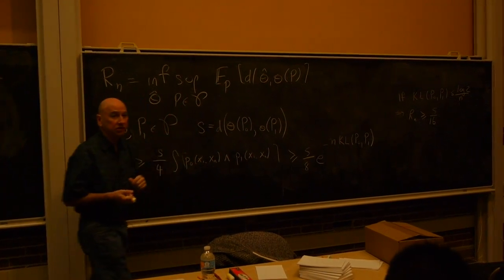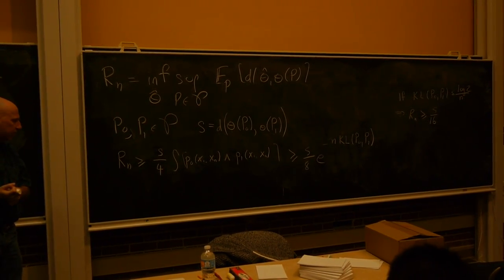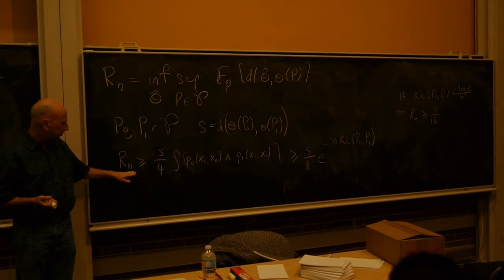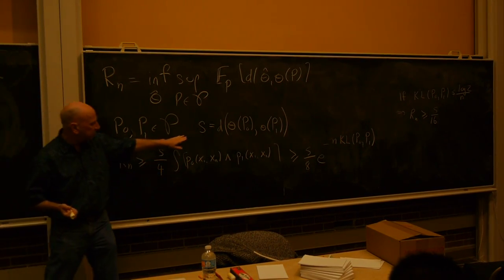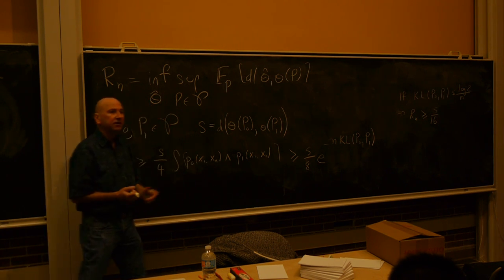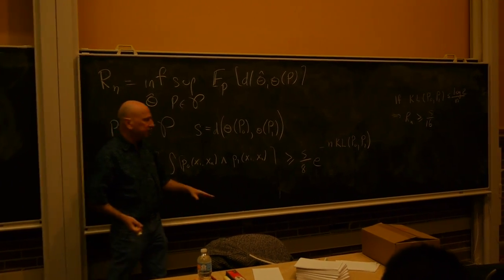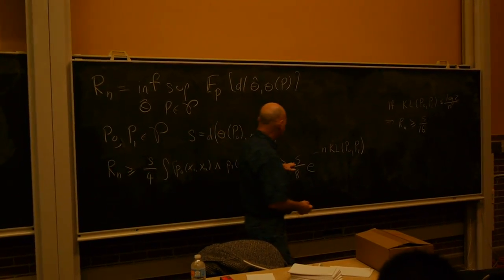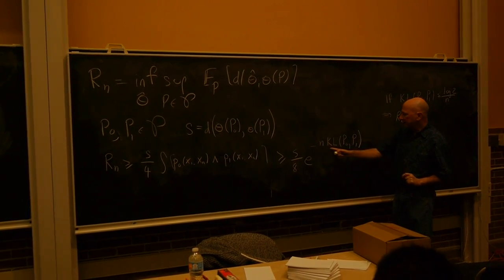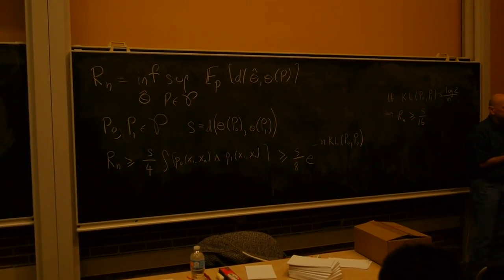The lower bound we have is that the risk is bounded by this distance, s over 4, times this affinity. And as I pointed out, this can be difficult to compute. So another bound that's useful is to replace that with m over 8, e to the minus n. And this is just the KL logarithm distance between p0 and p1.